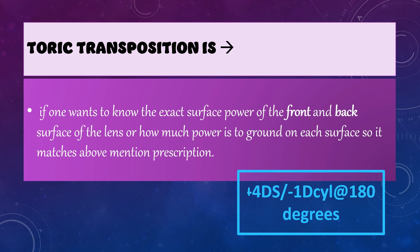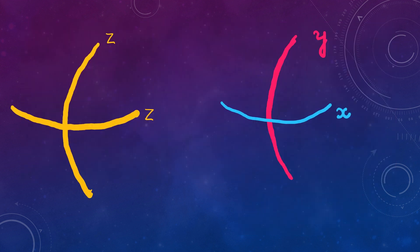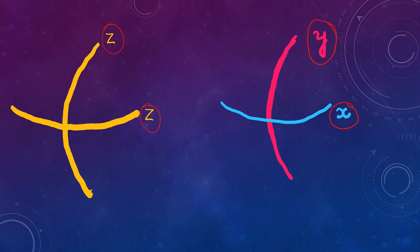Toric transposition is a type of transposition done at the level of manufacturing lenses. You need to know the exact surface power of the front of the lens and the back surface of the lens — what power is on the front, what power you will etch or carve at the back surface, and how much power you will grind on each surface to match the desired prescription. You have a spherical component on the front surface with equal power, and at the back surface you carve out two meridians — one as X and one as Y — with unequal powers.